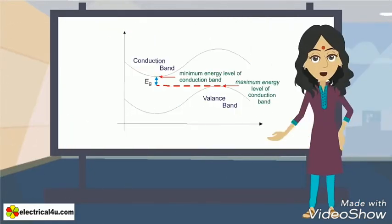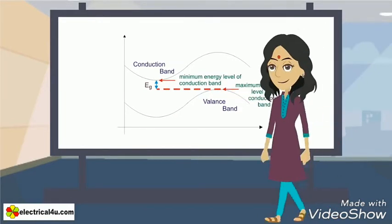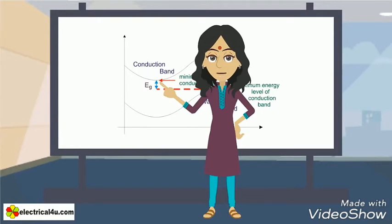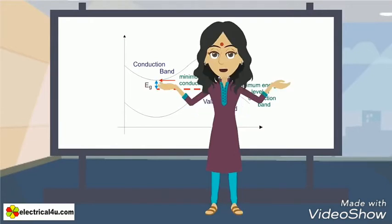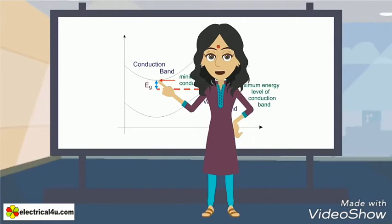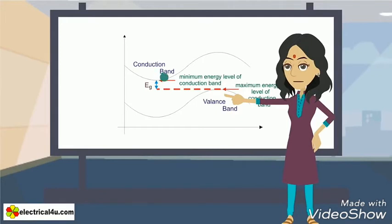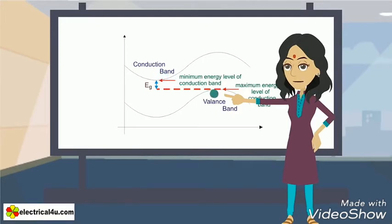In indirect gap semiconductor, the maximum energy level of valence band and minimum energy level of conduction band do not occur at the same momentum of electrons. Hence, during recombination of electrons and holes, that is, migration of electrons from conduction band to valence band, the momentum of electrons would be changed. The photons originated from these electrons will be mostly utilized for the electron momentum.